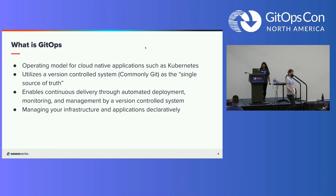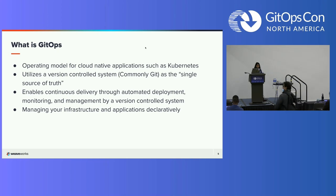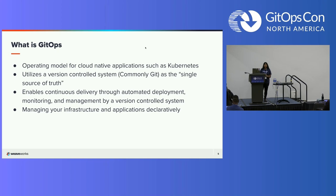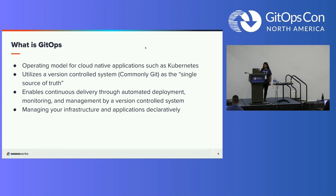I just want to highlight what is GitOps. It's an operating model for cloud native applications such as Kubernetes. I do want to mention that it's not just for Kubernetes — if you are doing a multi-cloud infrastructure, you can still use GitOps — but we're here talking about Kubernetes, so we'll be focusing on Flux.